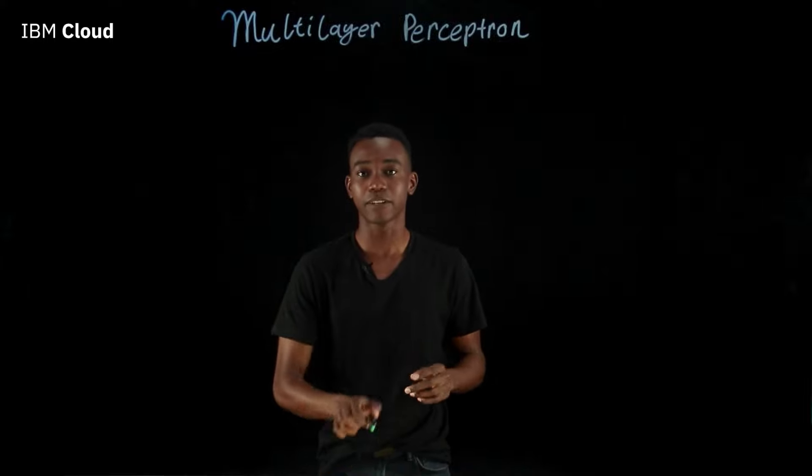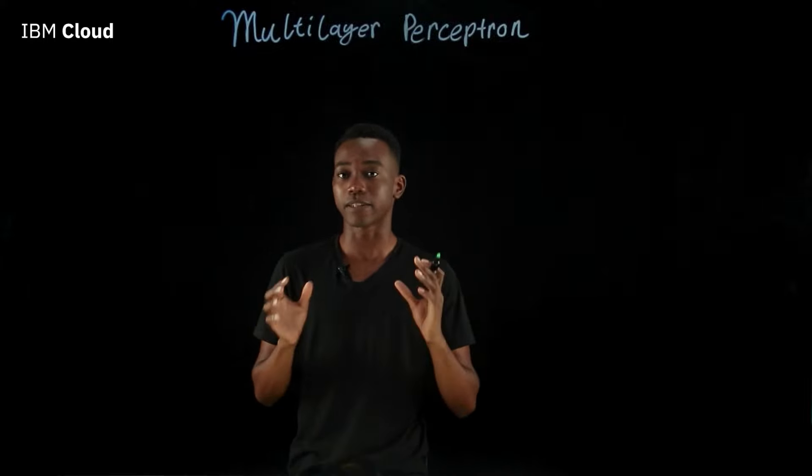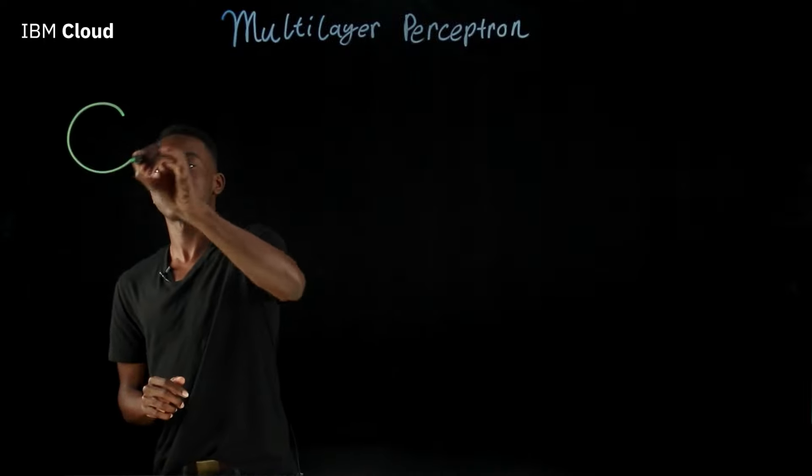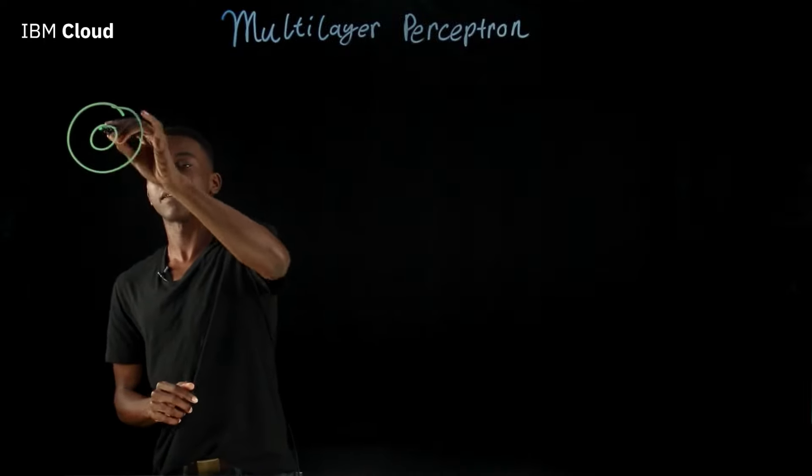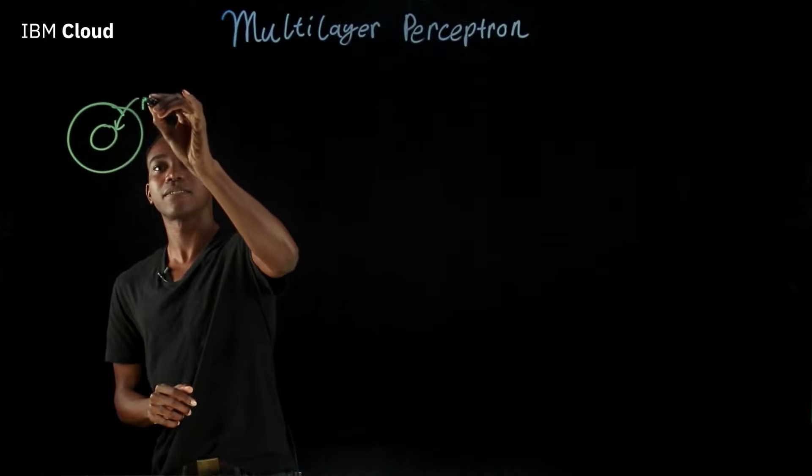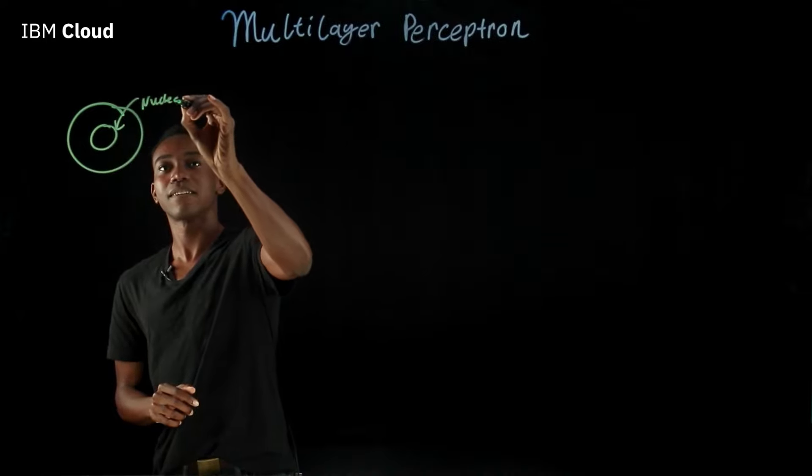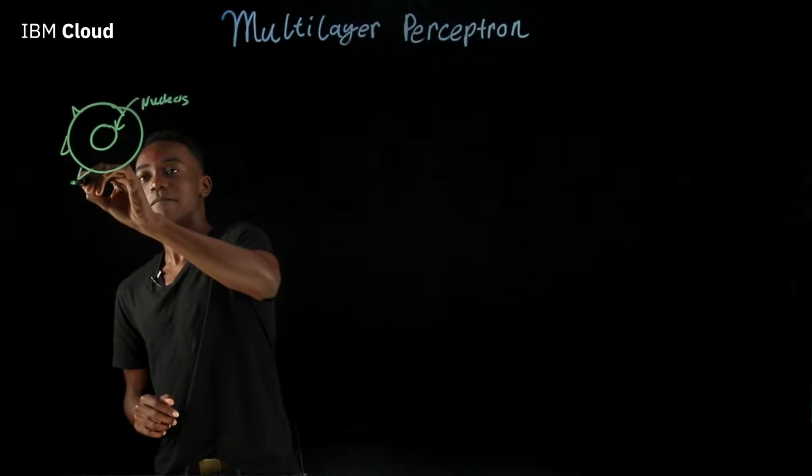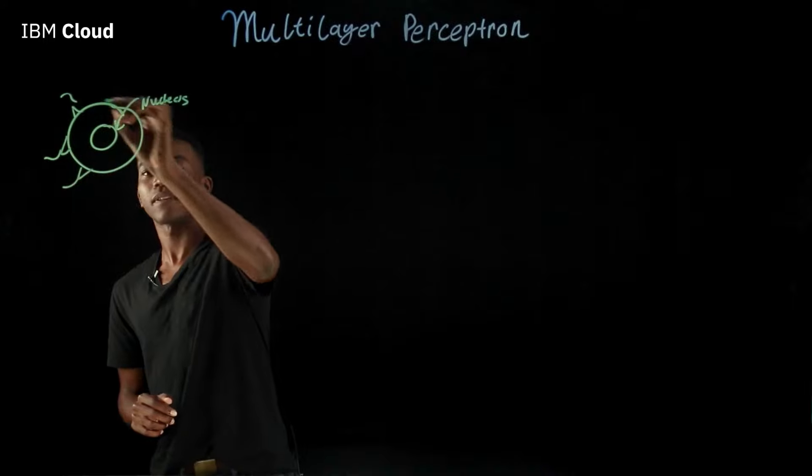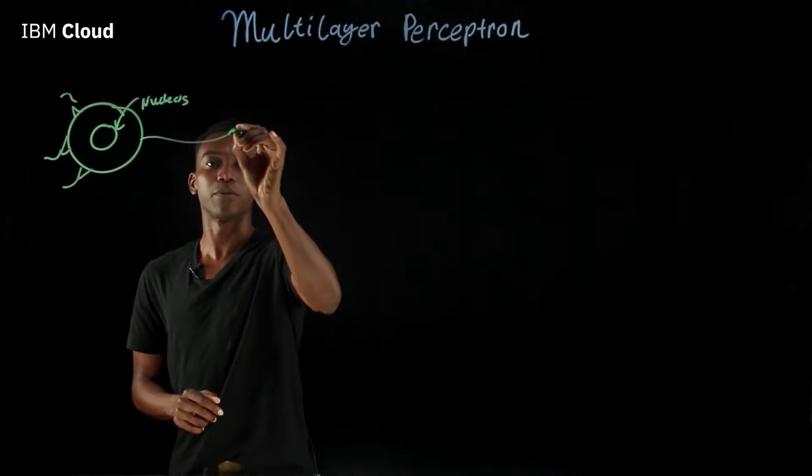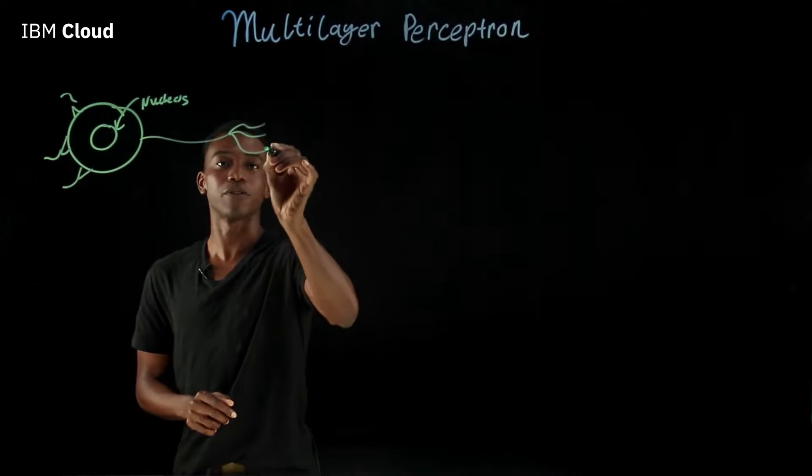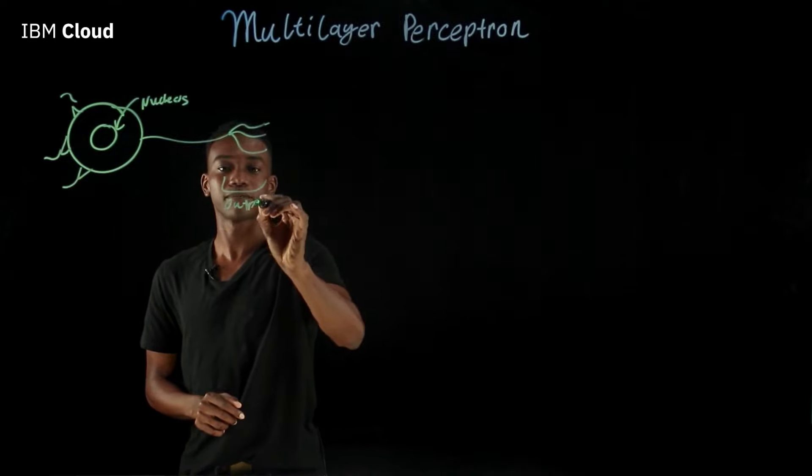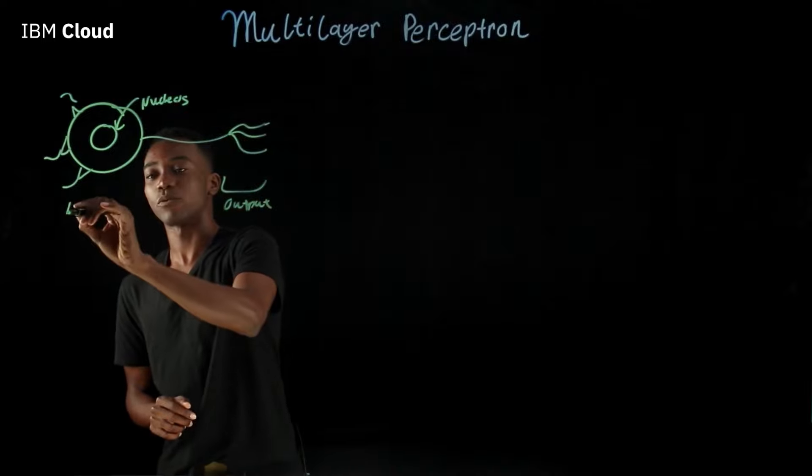The perceptron is heavily inspired by our own brain's most basic unit of thinking, which is the neuron. A neuron looks something like this. It has a nucleus. It takes in inputs from other neurons, and it gives out outputs to other neurons. So this forms the output, and this forms the inputs.